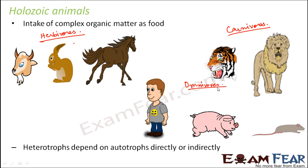All these are holozoic animals because whatever they eat is in a complex form. For example, if you eat an egg curry, that egg curry will not provide you energy directly or instantly — it is in a complex form. Once it gets inside your body, it needs to be broken down into the simplest form, and only then will it be able to provide you energy.